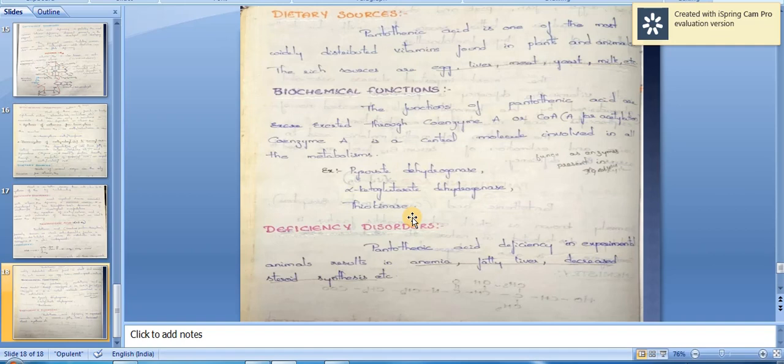Biochemical functions: the functions of pantothenic acid are exerted through coenzyme A. Coenzyme A is a central molecule involved in all metabolisms—carbohydrate metabolism, lipid metabolism, and protein metabolism. It plays a unique role in integrating various metabolic pathways.